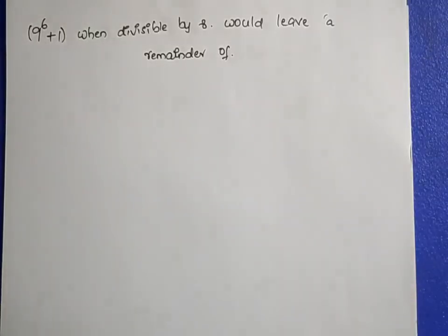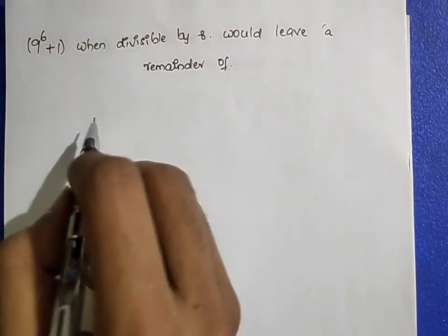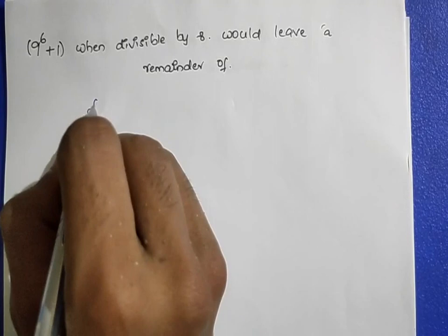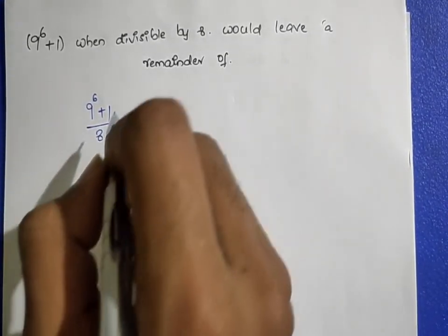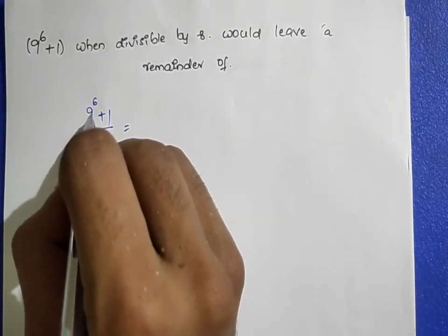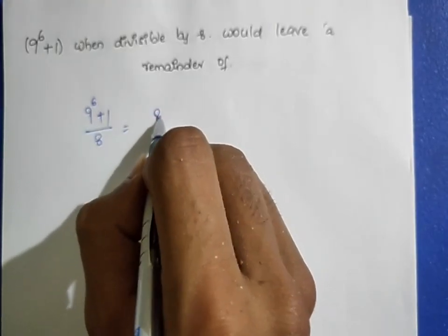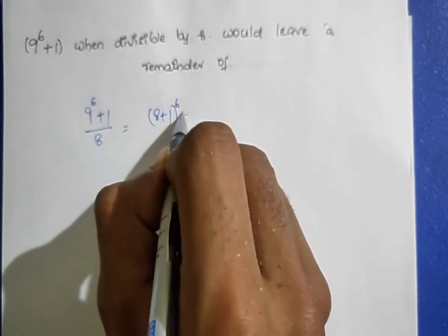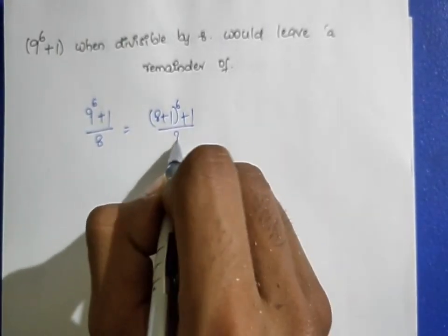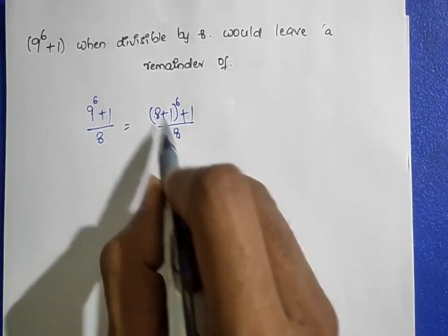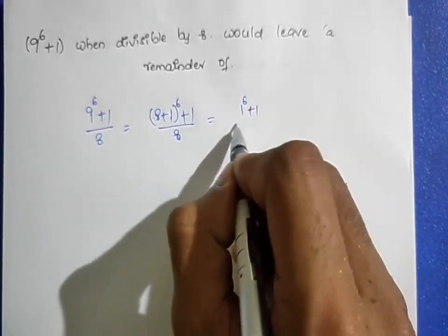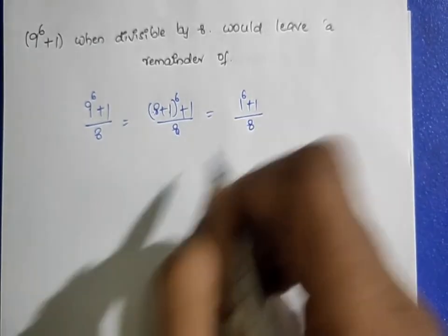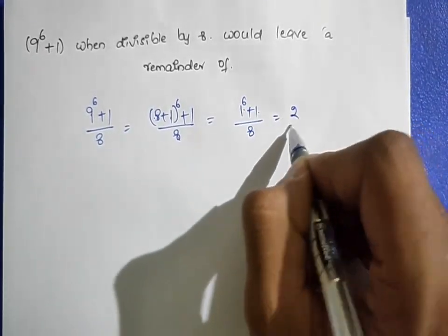Next: 9 power 6 plus 1 is divisible by 8. Write 9 as (8 + 1), so (8 + 1)^6 + 1 / 8. This gives 1^6 + 1 = 1 + 1 = 2. The remainder is 2.